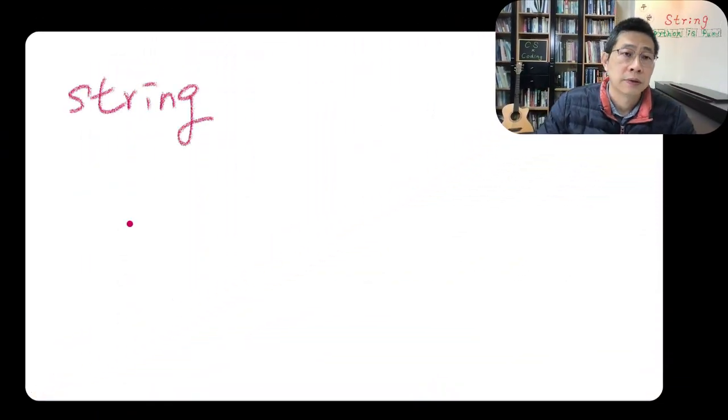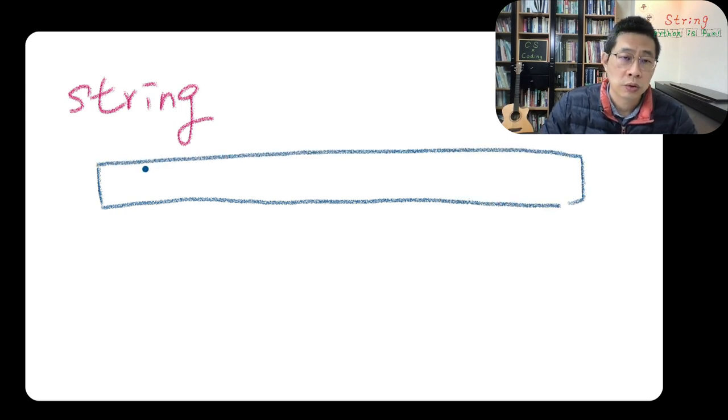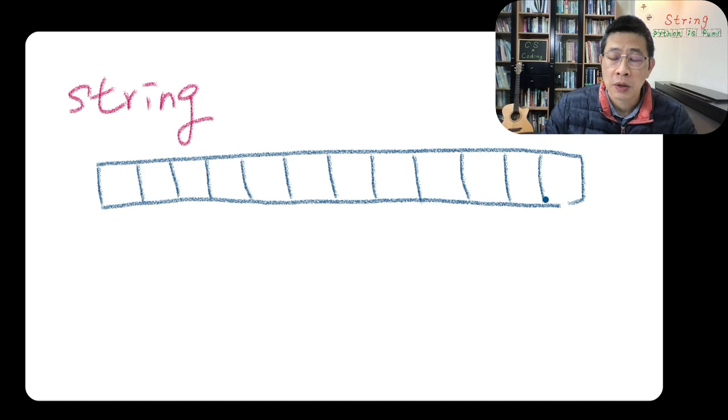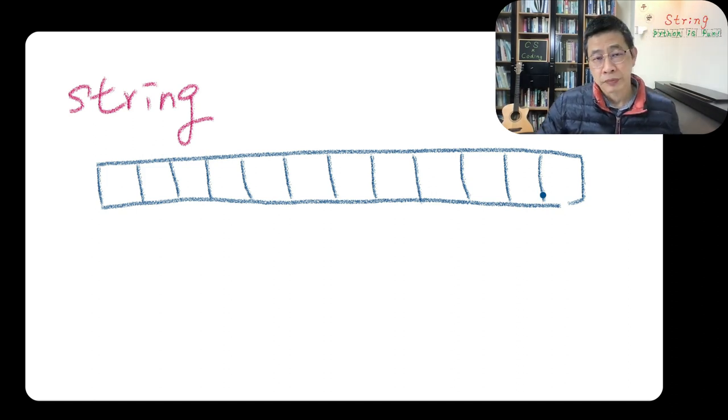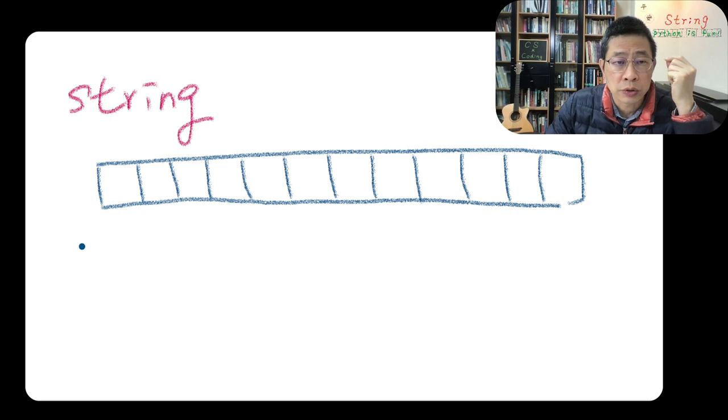So what is a string from a computer's point of view? Where do we actually store the string? Of course, strings require memory addresses. Normally we use strings to keep a sequence of text. For example, if you assign a variable, if we give the variable a string, for example variable P, you say P is Python.